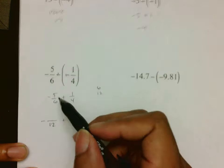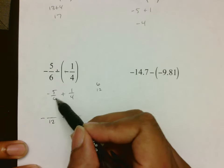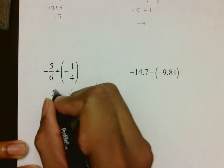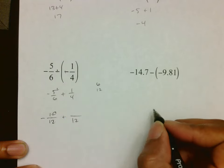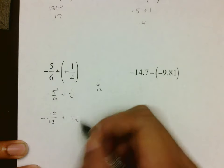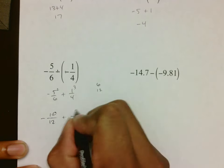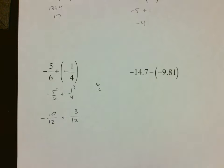That negative has to be there. Remember what we're supposed to do here is say 6 times what makes 12, and that's 2. 5 times 2 turns into 10. 4 times what makes 12, that is 3, and so that becomes 3 over 12.